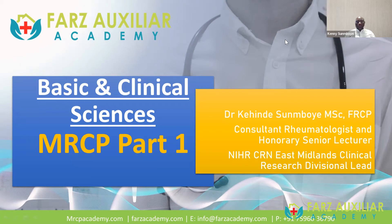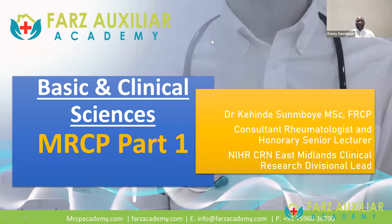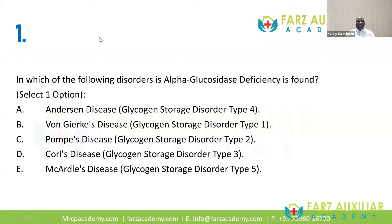I always like to have an interactive session, so hopefully you guys can contribute to some of what we talk about to get the best out of this session. So without much ado, let's make a start. Which of the following disorders is alpha-glucosidase deficiency found in? I always like my sessions to be interactive — I want to find who the top brain is for this session. Whoever is the first to type the answer in the chat or unmute themselves wins the points.